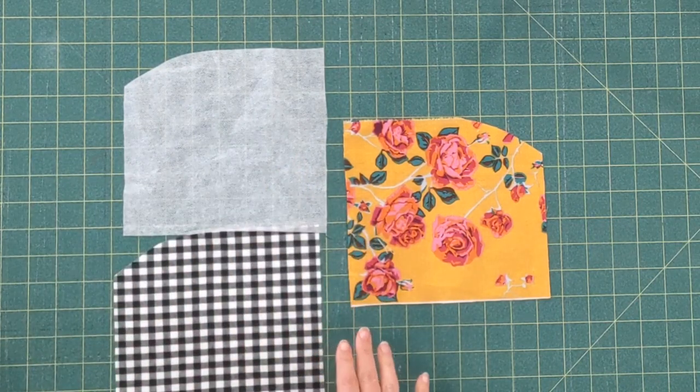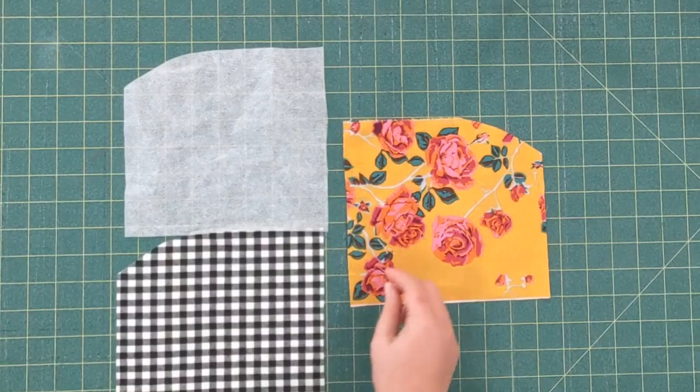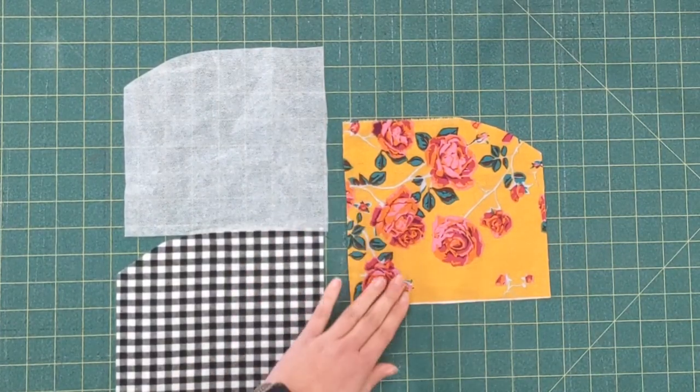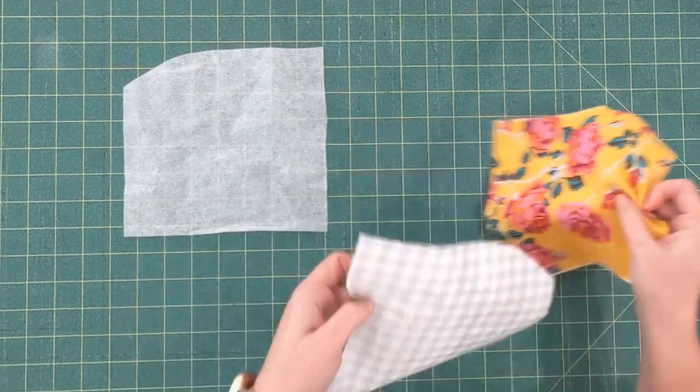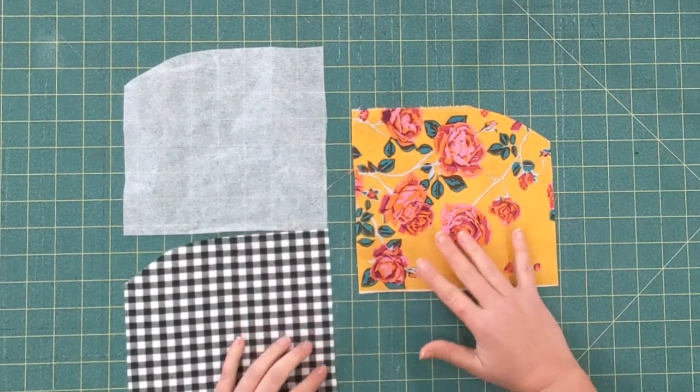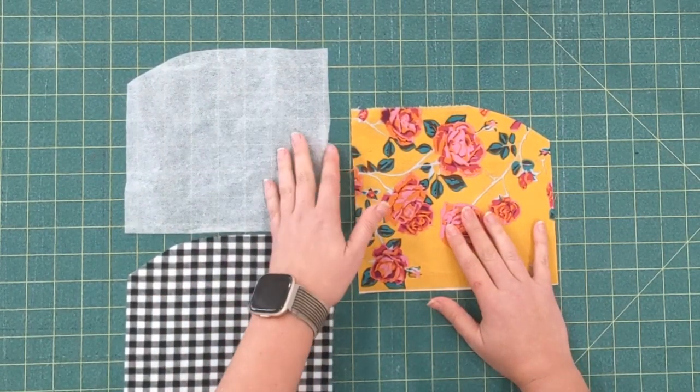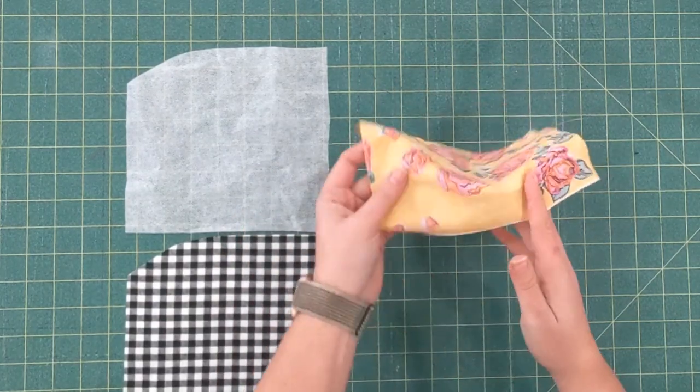So what you're going to need are two pieces of fabric. One is going to be your main and one is going to be your lining. You want to make sure that they're mirror images so that they're the right way when you put them together. This one will be my main, this will be my lining. I also have a piece of interfacing here that's also a mirror image to my main piece.